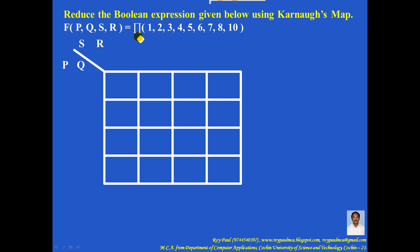Now, PI means each and every term is a plus term. So you can write P plus Q on one axis and S plus R on the other.